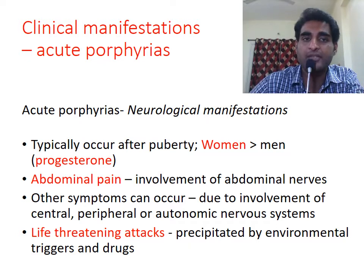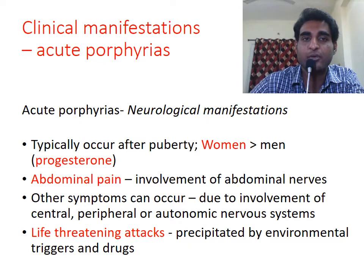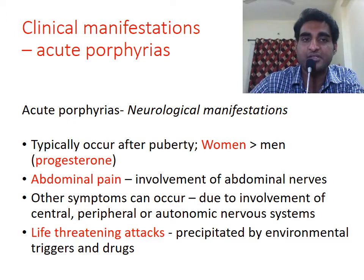Abdominal pain is the commonest symptom, due to involvement of abdominal nerves. Several other symptoms can also occur due to involvement of the central, peripheral, or autonomic nervous systems. Often these attacks are life-threatening and require immediate attention.